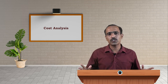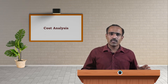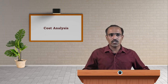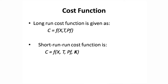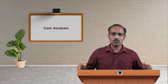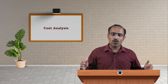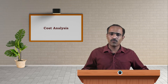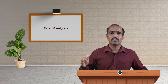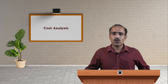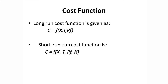The cost function represents the functional relationship between the cost of production and its various determinants. Cost function is derived from the production function. There are two categories of cost function: short-run cost function and long-run cost function. In the short run, some factors are variable and some are fixed, while in the long run all factors of production are variable. The cost function is therefore analyzed with the help of the time period.